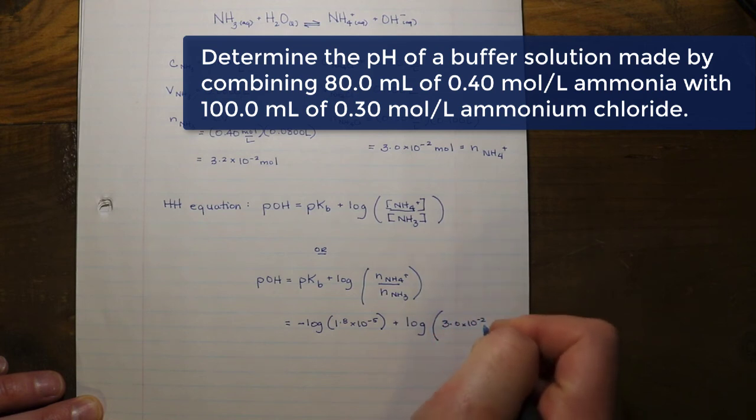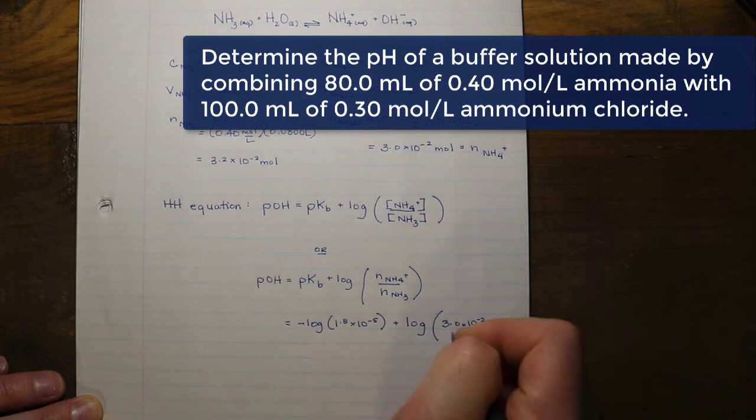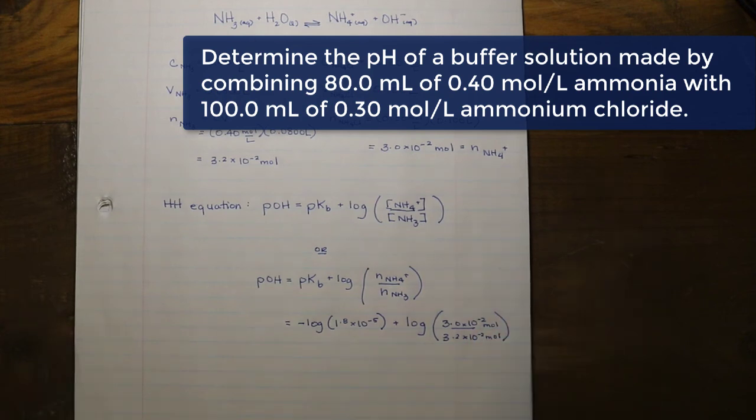In order to solve for this, you are going to have to calculate the negative log of 1.8 times 10 to the negative 5, and then you are going to add that to the log of 3.0 times 10 to the negative 2 divided by 3.2 times 10 to the negative 2. Make sure that you calculate this in the appropriate order.